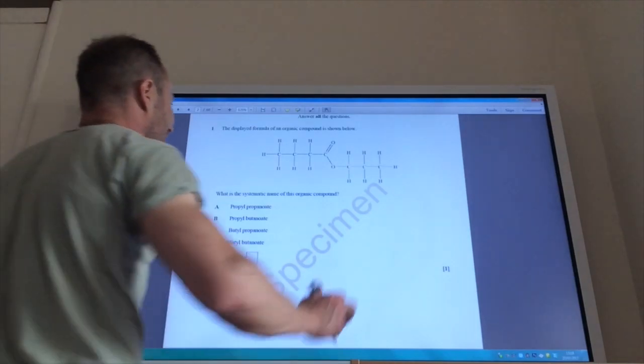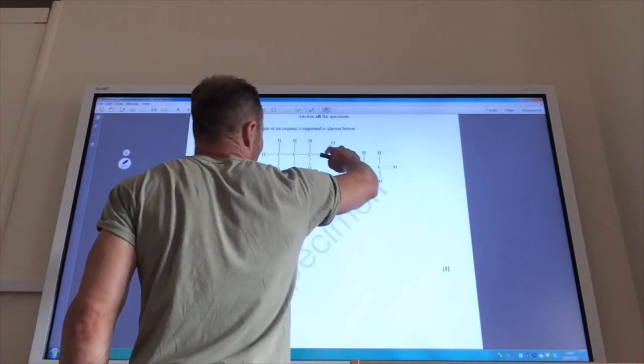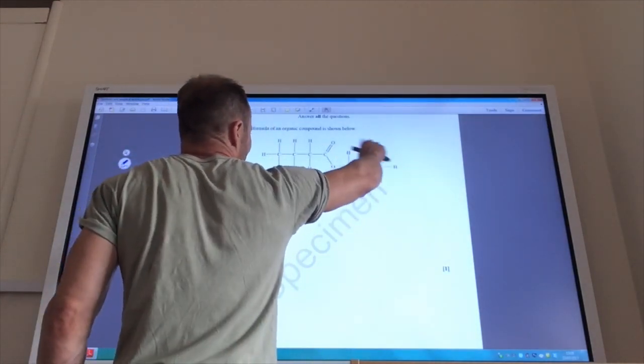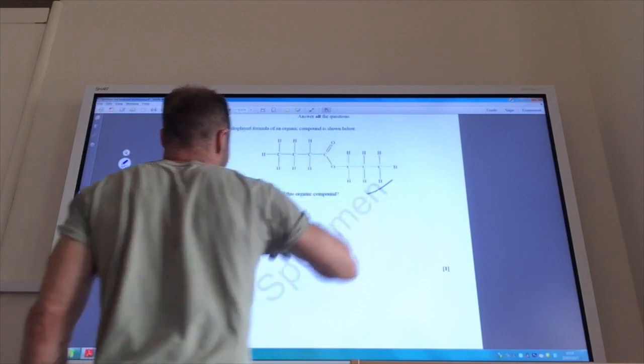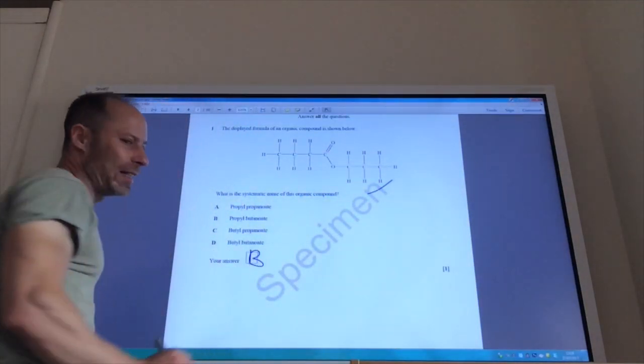First of all, a nice and easy one. This is obviously an ester. What's the name going to be? Well, this is a propyl group. You've got four carbons here. So it's propyl butanoate. So propyl butanoate is going to be B.